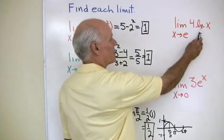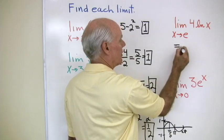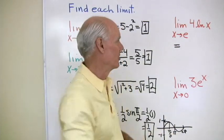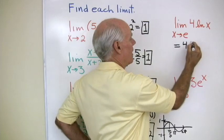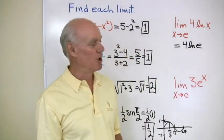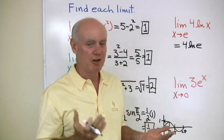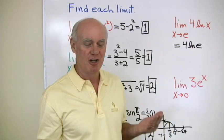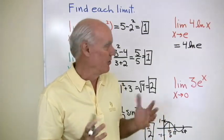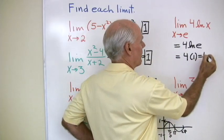How about a logarithmic function? The limit as x goes to e of 4 log x. Logarithmic functions are ones I can just substitute for, so this will be 4 natural log e. Remember, the natural logarithm and natural exponential functions are inverse functions, so applying one undoes the other — natural log of e equals 1. I end up with 4 times 1, which is 4.